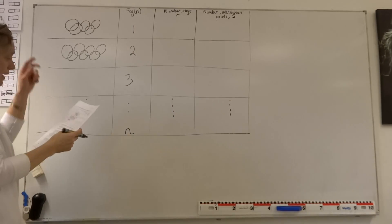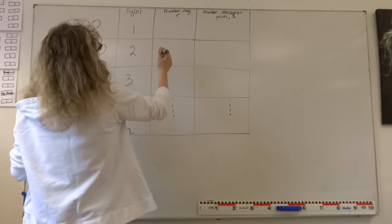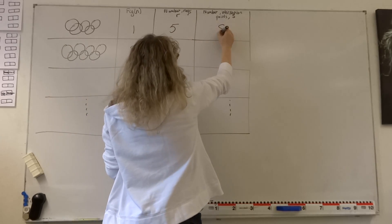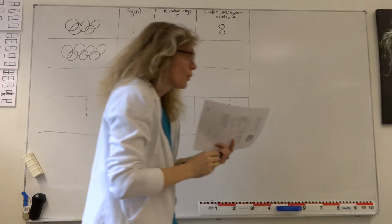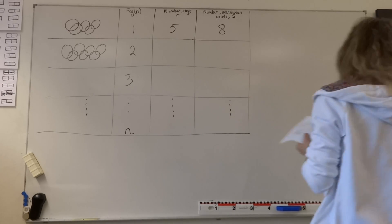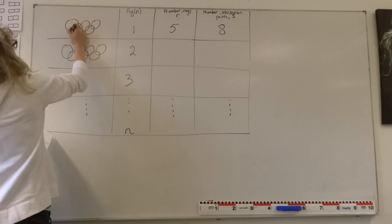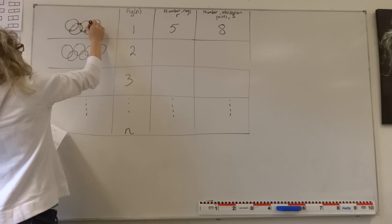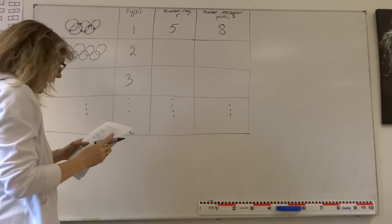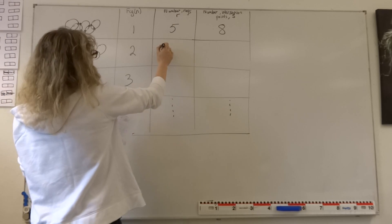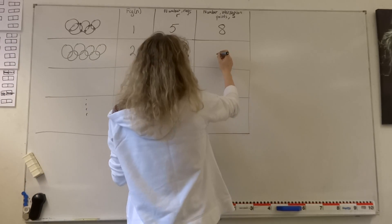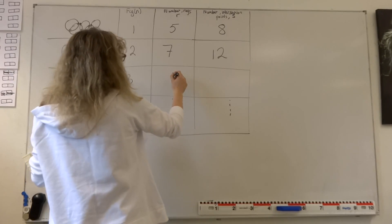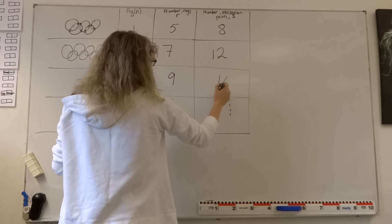They've told us that in figure number 1 there are 5 rings and 8 intersection points, which we can count: 1, 2, 3, 4, 5, 6, 7, 8. In figure number 2 there are 7 rings and 12 intersection points. In figure number 3 there would be 9 rings and 16 intersection points.